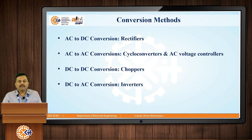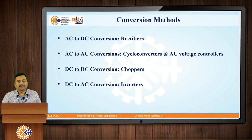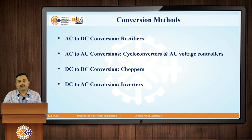DC to DC conversion is the third type, and these circuits are basically named as choppers. Choppers are circuits which are used to increase or decrease the voltage levels. The fourth conversion method is DC to AC conversion, which is called inverters. Inverters are devices which convert DC supply into variable AC supply — we might be familiar with these circuits as they are used in our homes.